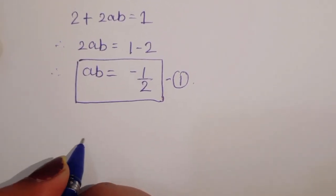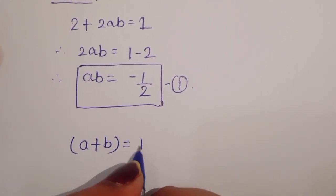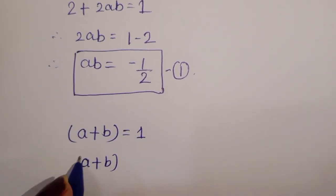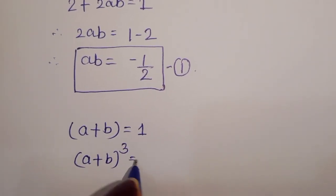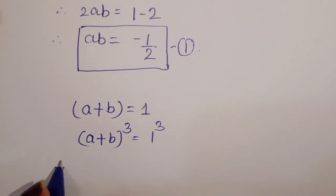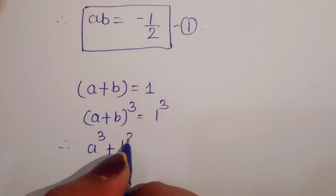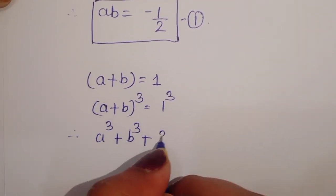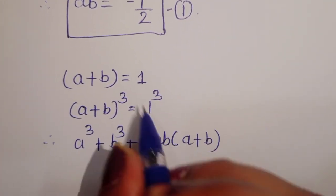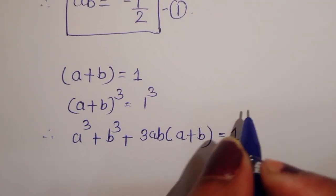Now a plus b is equal to 1 (given). We can take the cube: a plus b cube is equal to 1 cube. Therefore a cube plus b cube plus 3ab into a plus b is equal to 1, using the formula for a plus b whole cube.